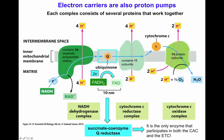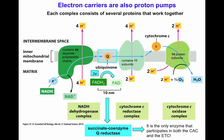The succinate coenzyme Q reductase — the succinate dehydrogenase — is an enzyme that is part of the citric acid cycle and is the only membrane-bound enzyme in that cycle. It participates in both the citric acid cycle and the electron transport chain. When succinate is oxidized into fumarate, it donates its electrons to FAD, generating FADH2. FADH2 then donates its electrons directly to ubiquinone, which accepts those two electrons to become ubiquinol. Notably, there is no transfer of protons across this succinate coenzyme Q reductase.